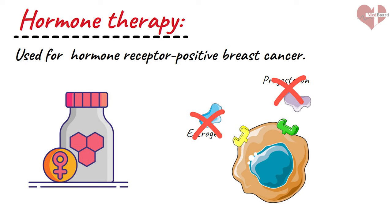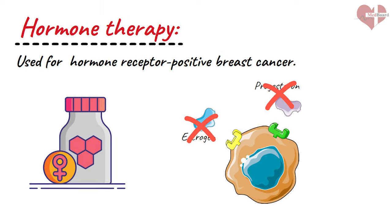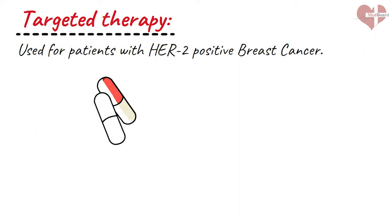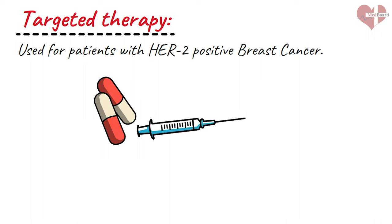Hormone therapy can cause side effects such as hot flashes and mood changes. Targeted therapy is a newer type of treatment that targets specific proteins or other molecules that help cancer cells grow and divide. It is used for patients with certain types of breast cancer, such as HER2-positive breast cancer, and can be given as a pill or injection, with side effects such as fatigue and nausea. In some cases, a combination of these treatments may be used, and the treatment plan is tailored to the individual patient and may change as the cancer progresses or as new treatments become available.